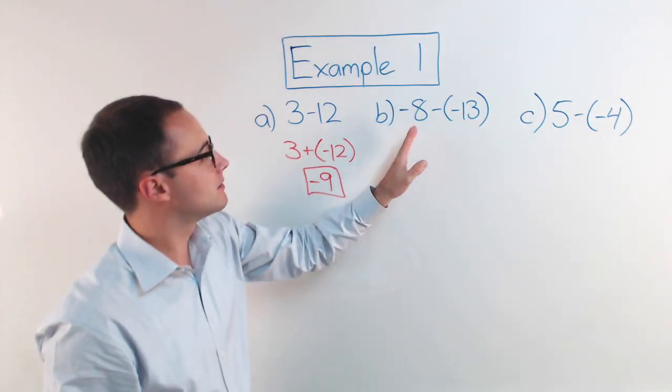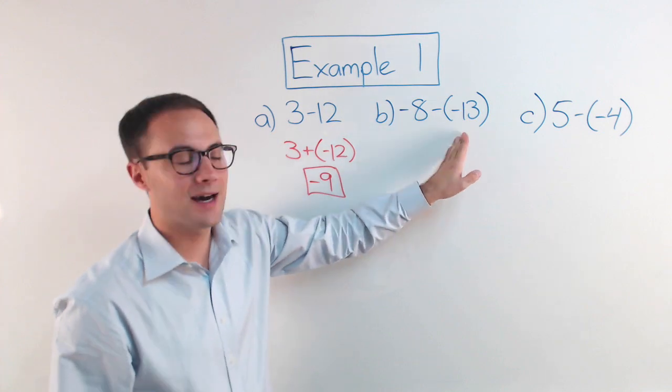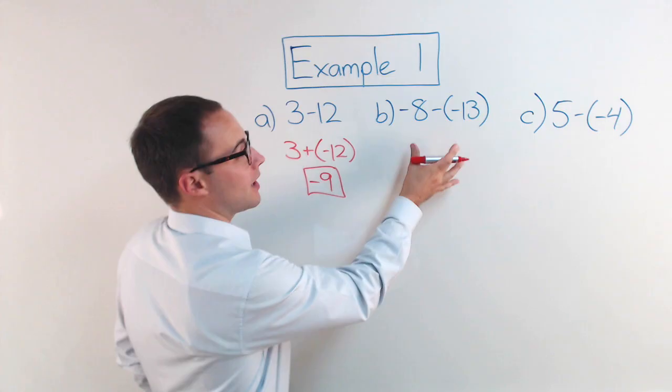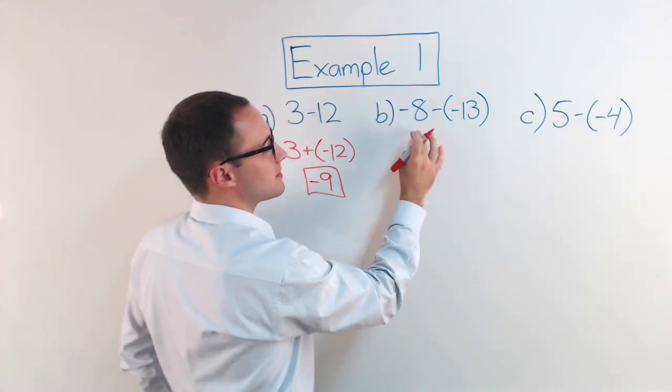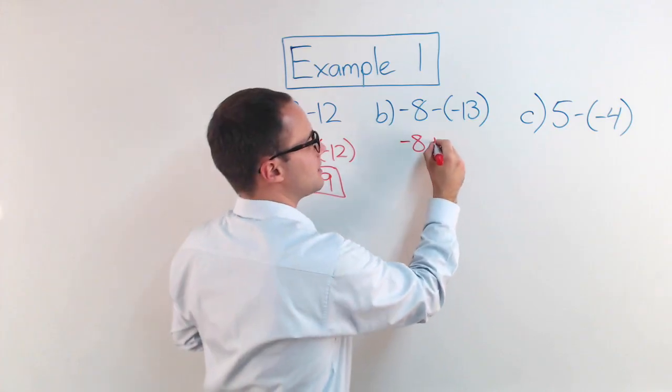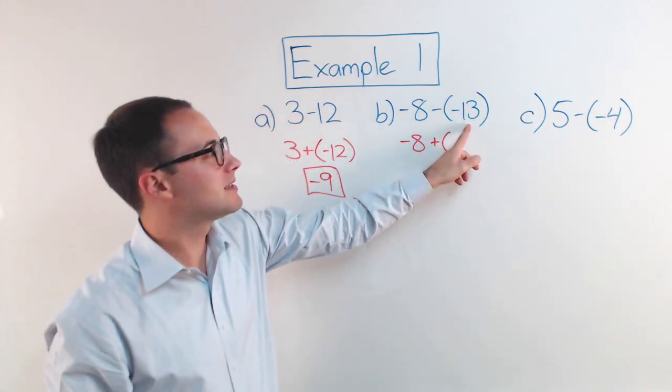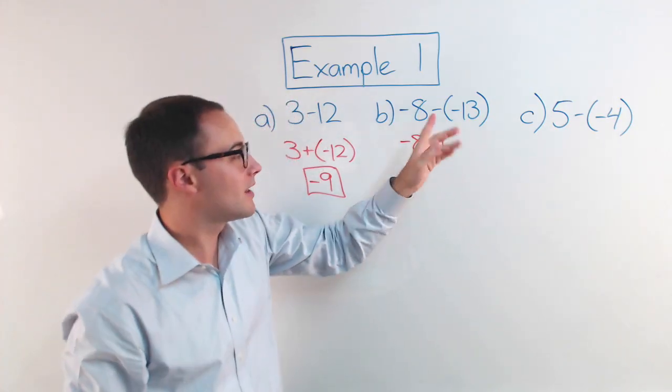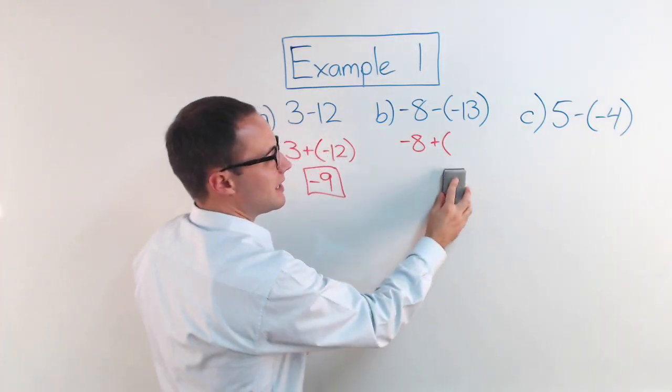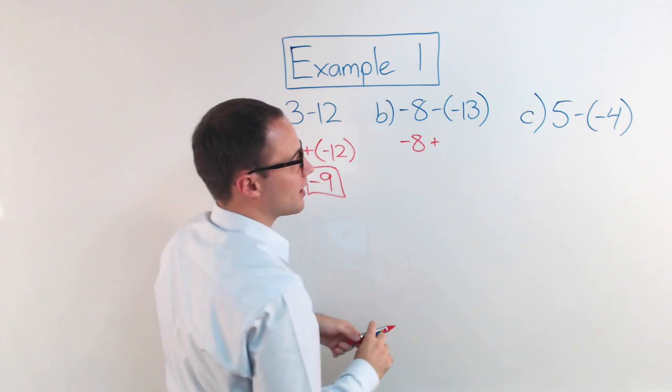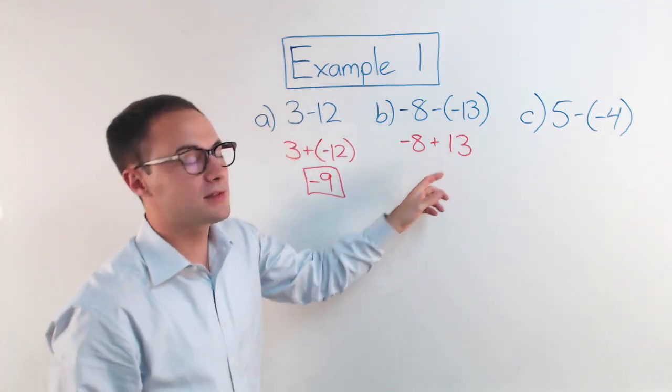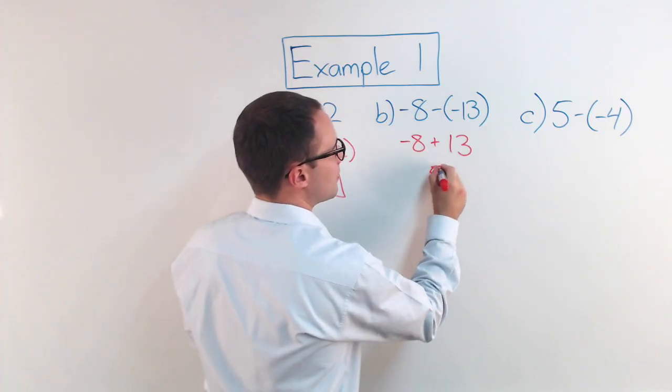The next one, negative 8 minus a negative 13. Again, I'm subtracting integers. It's the same thing as adding its opposite. Negative 8 stays the same. Subtraction becomes addition. And the opposite is 13. The opposite of negative 13 is 13. So, really, I don't even need my parentheses there because it's a positive 13. So, negative 8 plus 13 is going to give me 5.